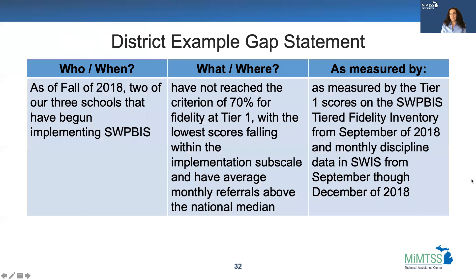Here's an example of what a gap statement might look like at the district level. As of fall 2018, two of our three schools that have begun implementing school-wide positive behavioral interventions and supports have not reached the criterion of 70% for fidelity at tier one,